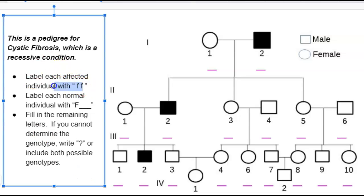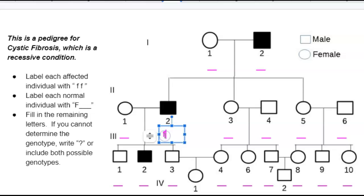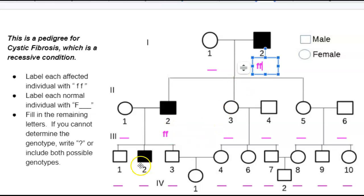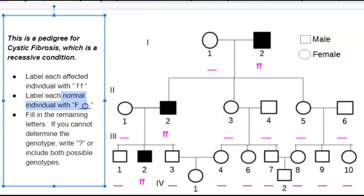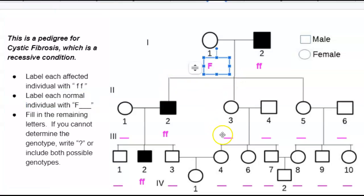We are going to start labeling each individual that's shaded with a little f and a little f. This is always step one. Step two, each normal individual is going to have a big F.